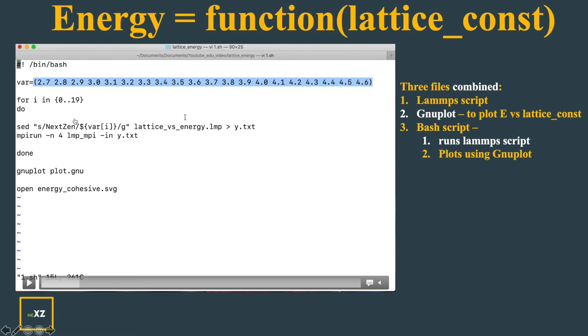Let's see whether that's true or not. I vary i from 0 to 19, there are like 20 variables from 2.7 to 4.6 there are 20 values and I vary from i from 0 to 19 means 20 variables. I use sed. Sed is like find and replace. What I do is I find the nextzen and I replace that with the variable i. It goes in a loop. Variable i of 0 means it goes from 2.7 then 2.8 and it goes to 4.6. It replaces that.